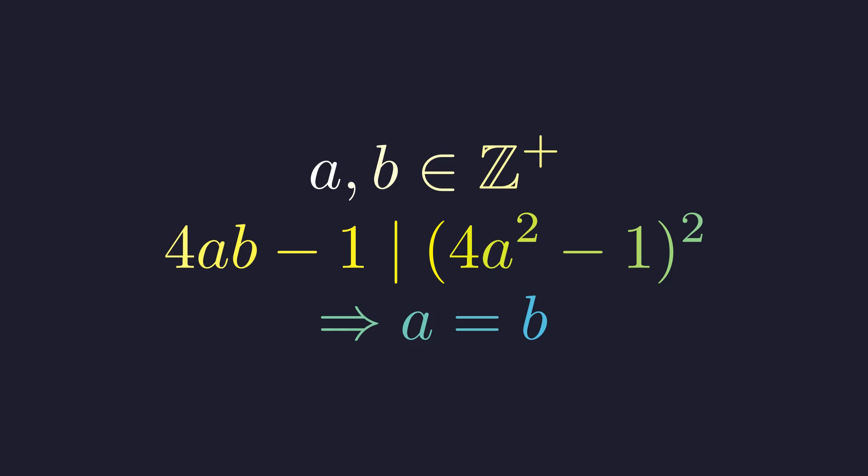Problems at this level are designed to be challenging. A direct approach is unlikely to succeed. The solution requires uncovering a hidden algebraic structure, a common theme in advanced number theory. A direct algebraic assault on this problem is inefficient. A more strategic approach is to transform the divisibility condition into a more symmetric and manageable form. We will use insights from modular arithmetic to achieve this.